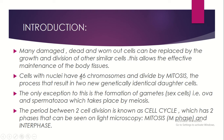Cells with nuclei have 46 chromosomes and divide by mitosis, the process that results in two new genetically identical daughter cells. If a cell has 46 chromosomes and divides by mitosis, the end result is two new identical daughter cells, each also having 46 chromosomes. This division process is called mitosis.